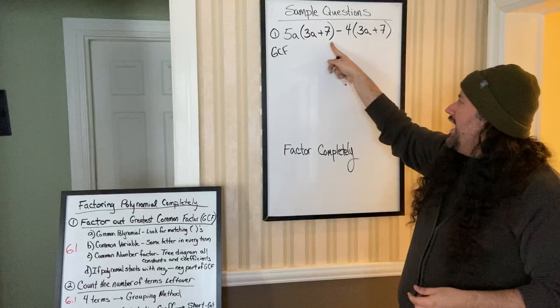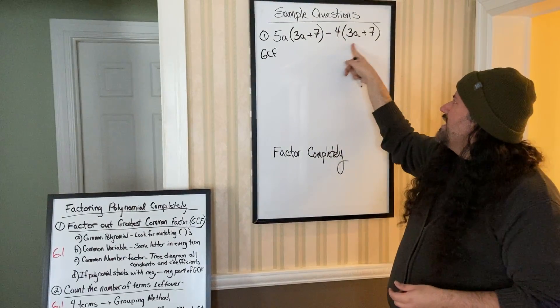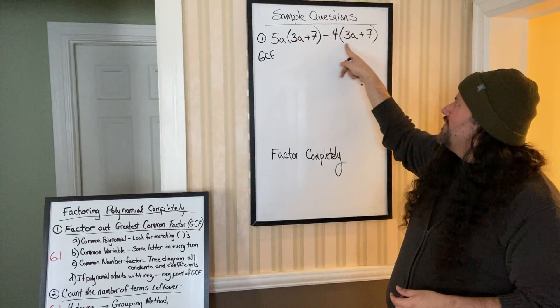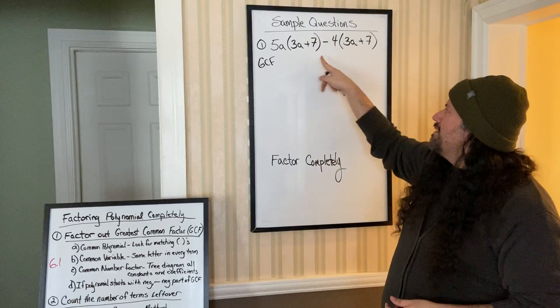So for us, step A: do we have any matching parentheses? Yes, that means we have a GCF that's a common polynomial. In our case, a binomial.